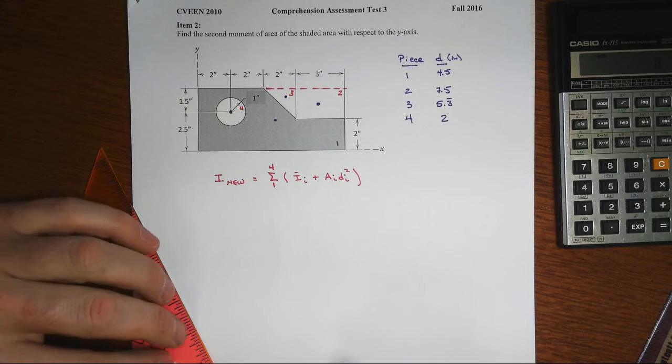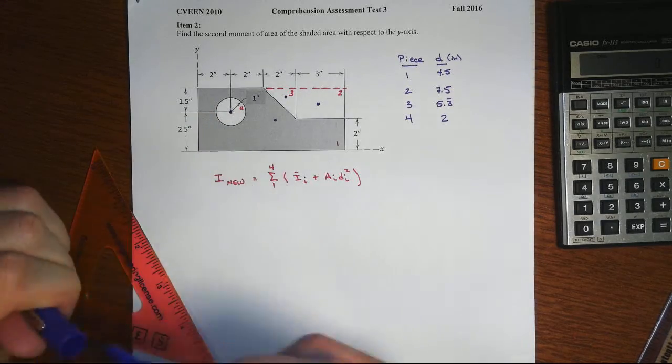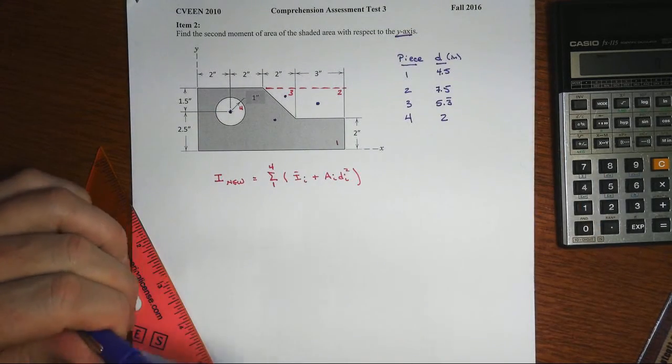In the second item, we're asked to find the second moment of the area, the shaded area, with respect to the y-axis. This is key. It's the y-axis that we want, not the x-axis.